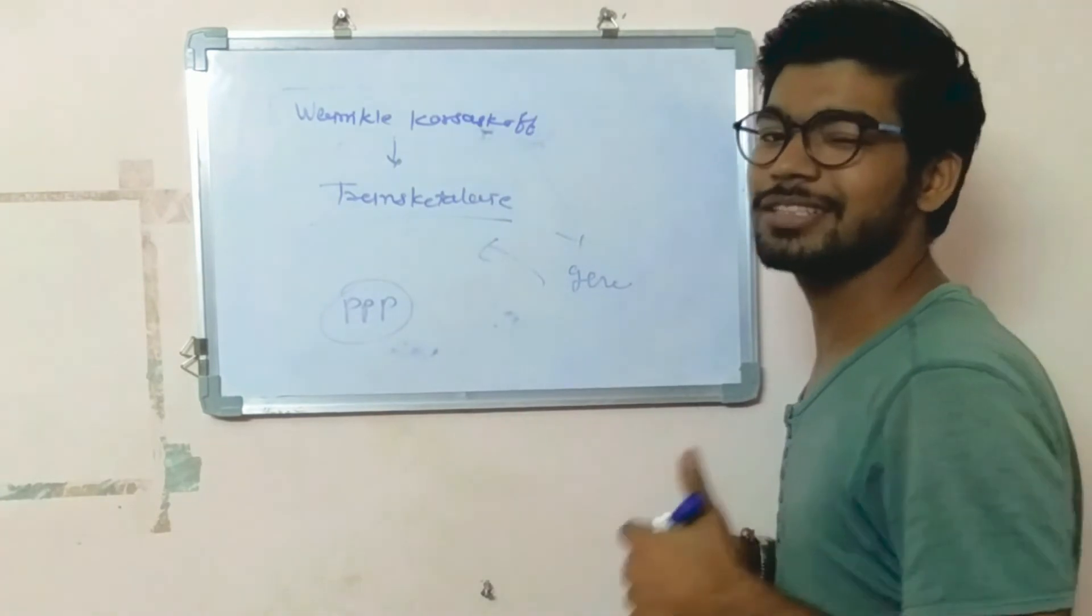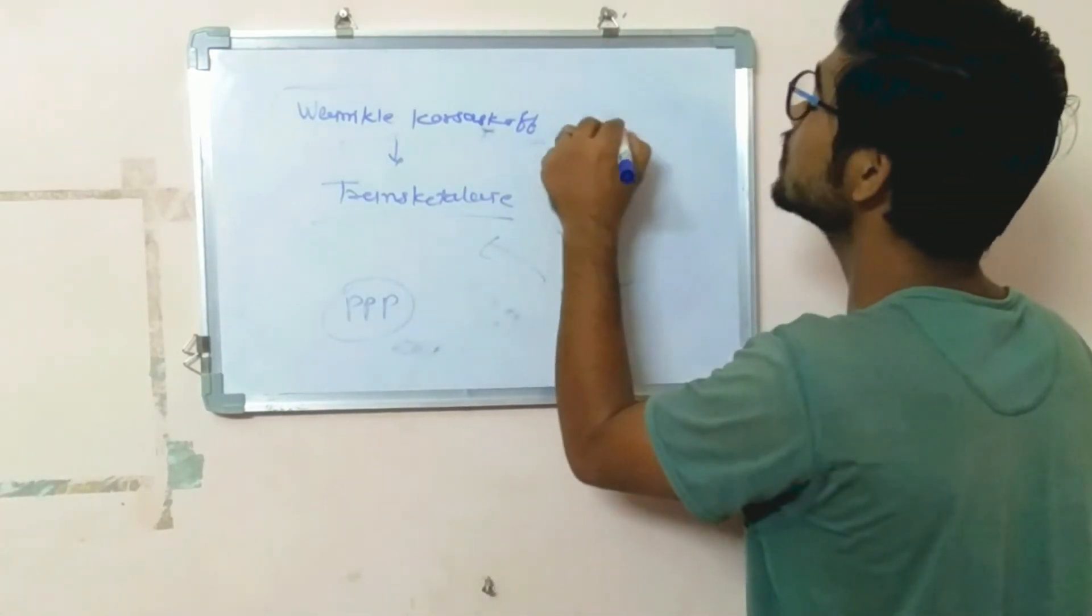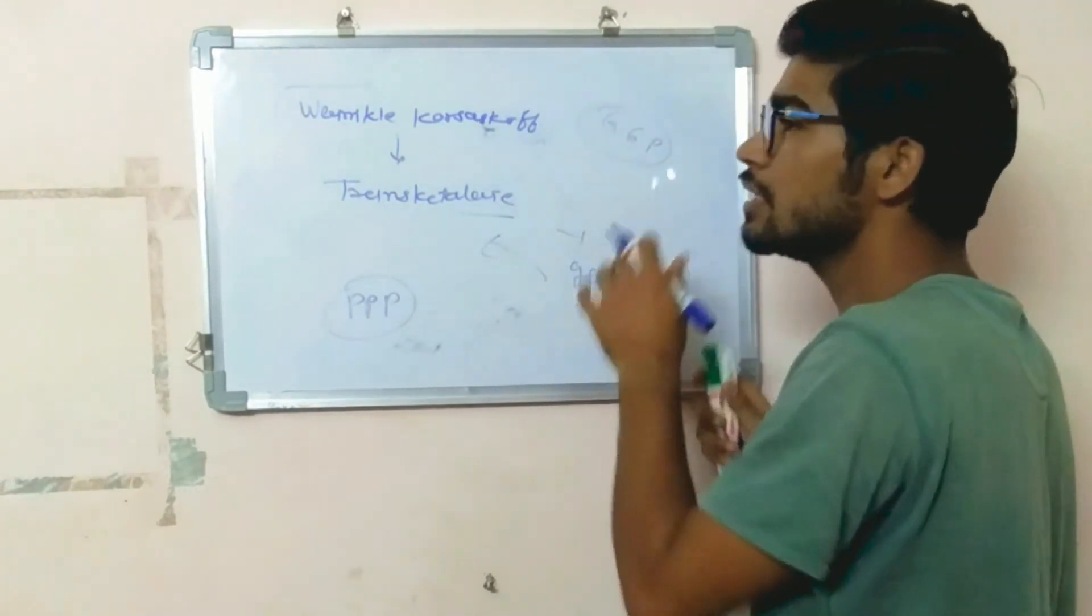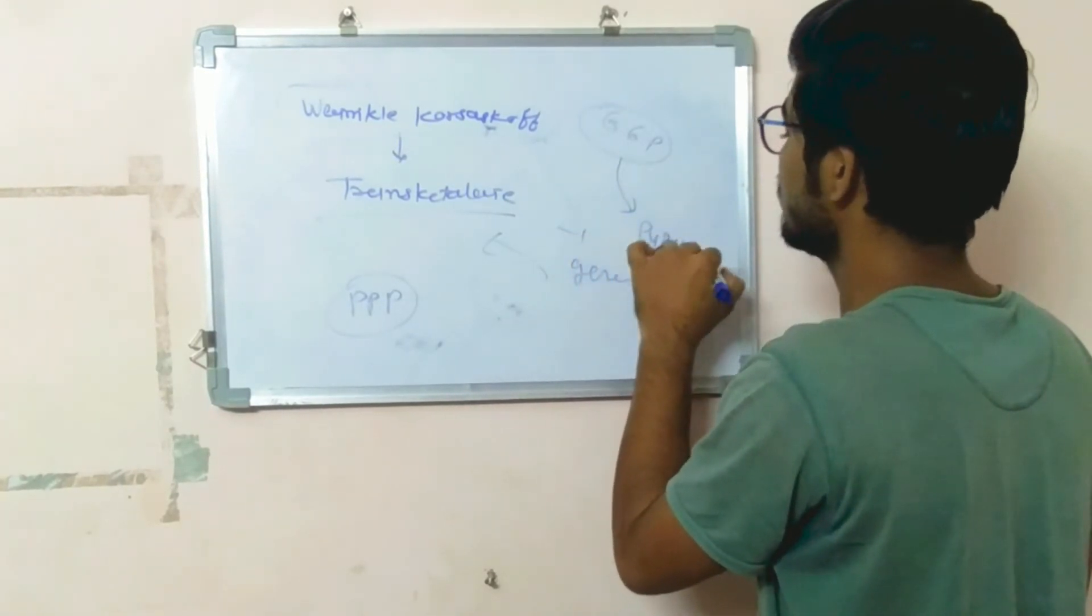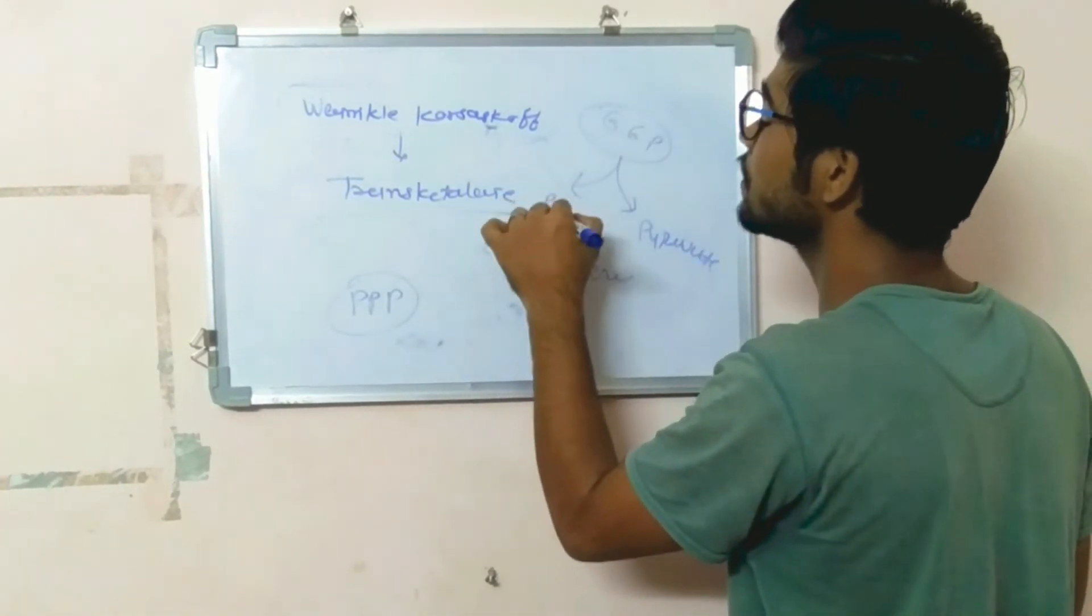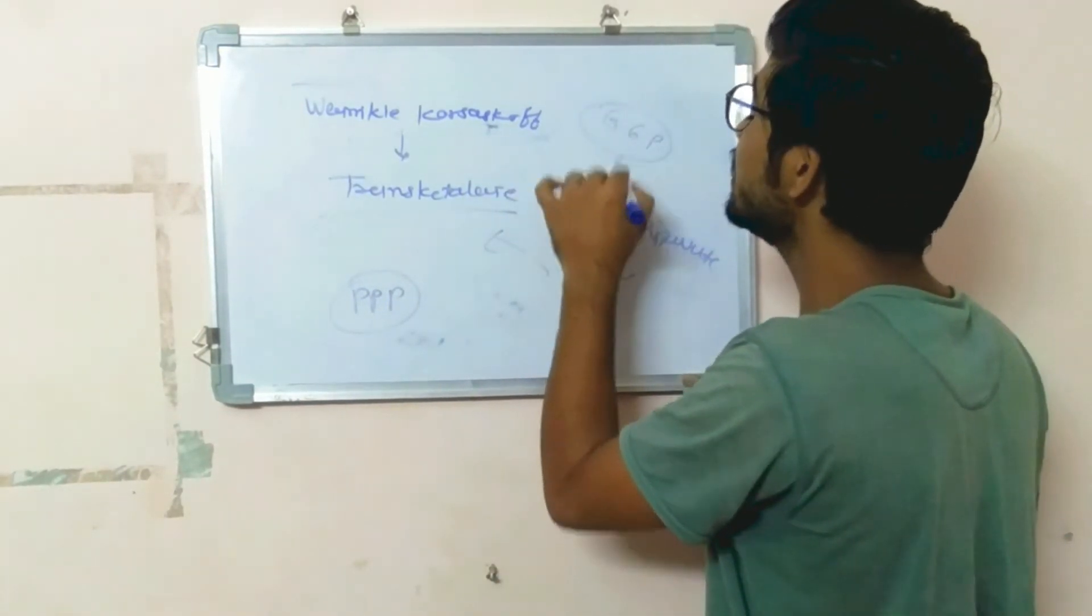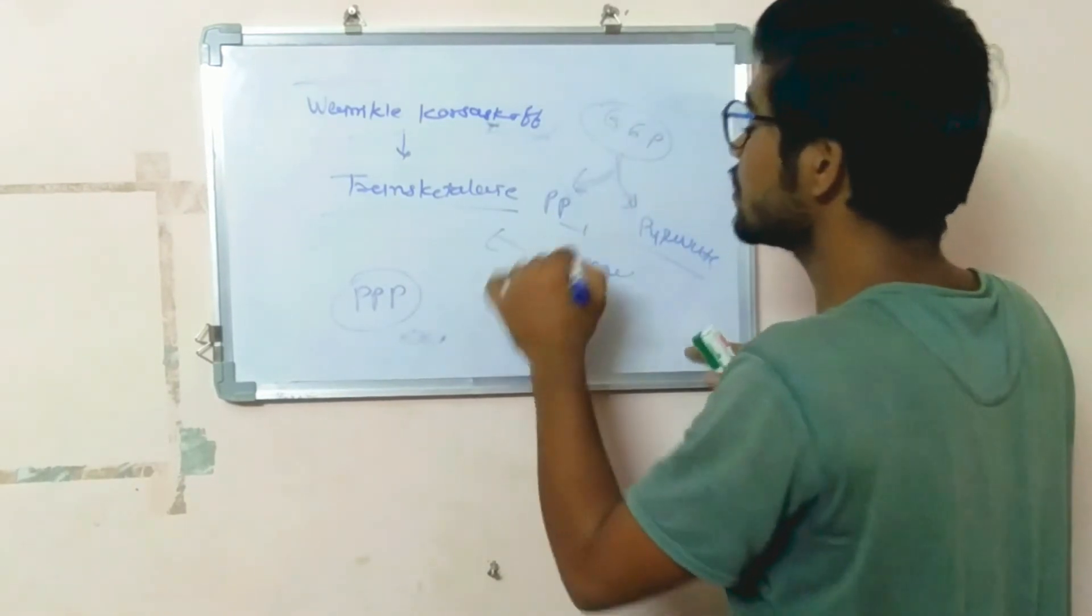The second thing about glucose-6-phosphate: this is the main precursor molecule which can be converted into pyruvate or into pentose sugar. By the need of the cell, it can go either way, either glycolysis or the pentose phosphate pathway.